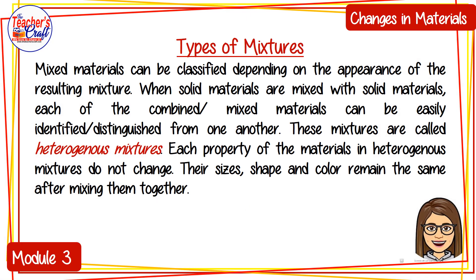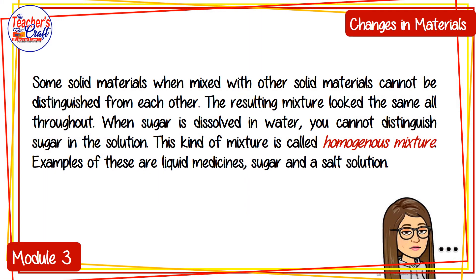There are types of mixtures. Mixed materials can be classified depending on the appearance of the resulting mixture. When solid materials are mixed with solid materials, each of the combined materials can be easily identified or distinguished from one another. These mixtures are called heterogeneous mixtures. Each property of the materials in heterogeneous mixtures does not change — their sizes, shape, and color remain the same after mixing. Some solid materials, when mixed with other solid materials, cannot be distinguished from each other; the resulting mixture looks the same throughout. When sugar is dissolved in water, you cannot distinguish the sugar in the solution. This kind of mixture is called a homogeneous mixture. Examples include liquid medicines, sugar, and salt solution.